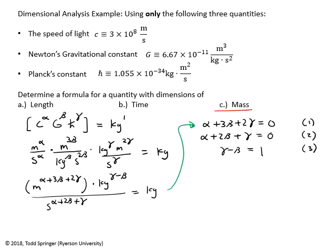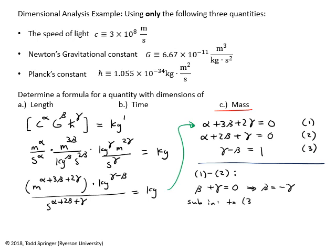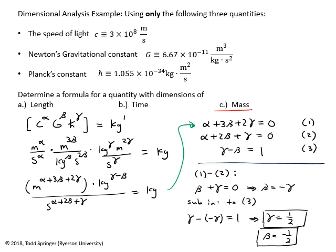At this point it's a math problem. Taking equation 1 minus equation 2 cancels the alphas, giving β + γ = 0, so β = −γ. Substituting into equation 3: γ − (−γ) = 1, so 2γ = 1, giving γ = 1/2. And from above, β = −1/2.